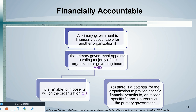We talked about permanent funds, proprietary funds — both enterprise and internal service — and fiduciary funds, both custodial as well as trust funds. And here we are in the last chapter, where we're going to talk about the final report. In the past, I've shown you the city of Boca Raton's CAFR as an example, and I still refer back to that.